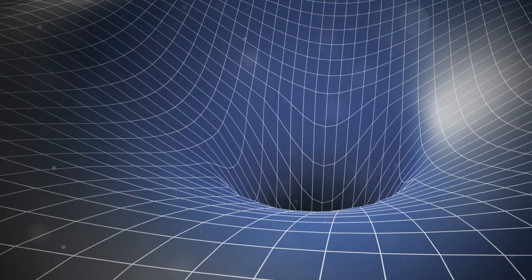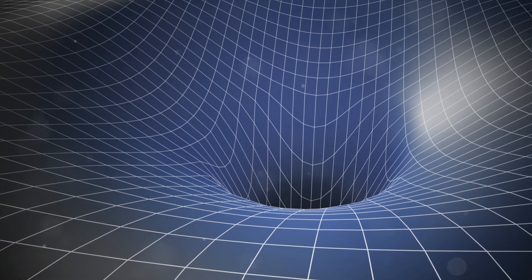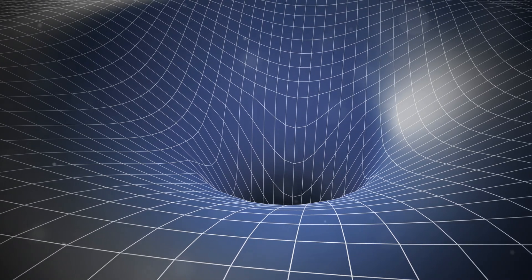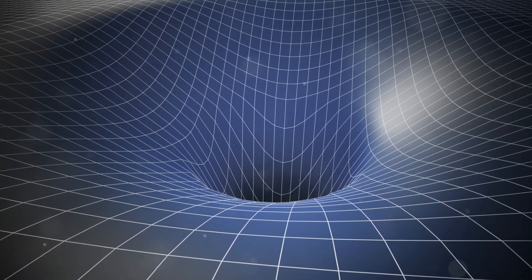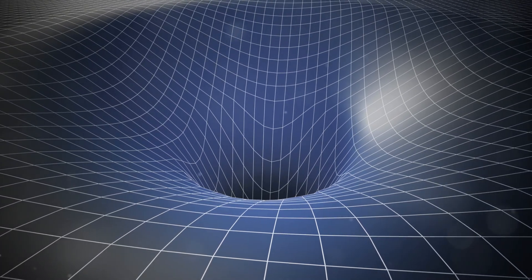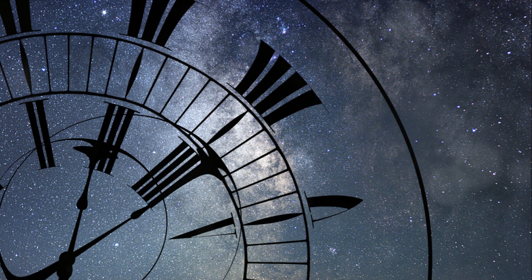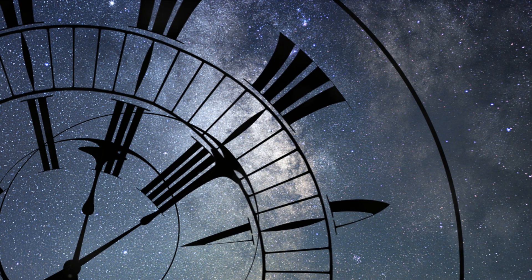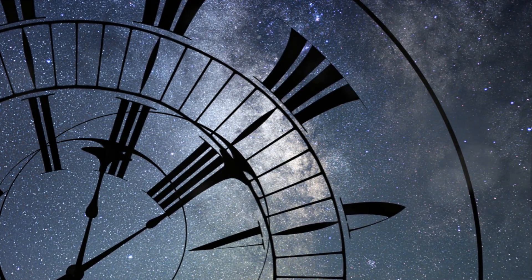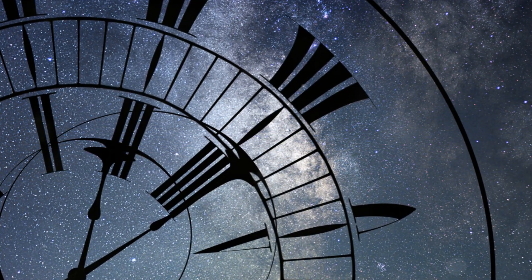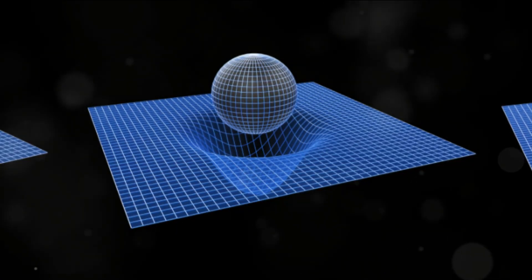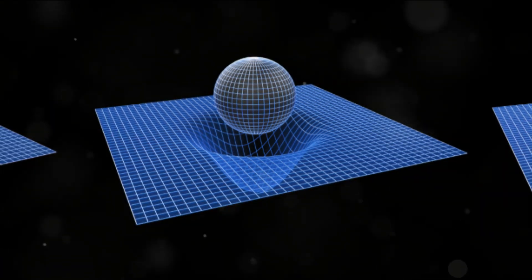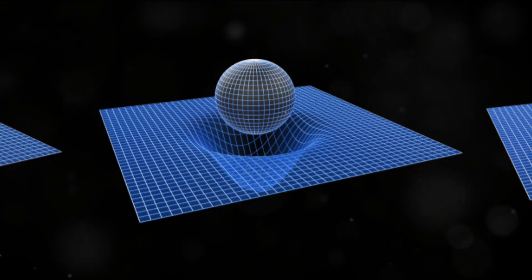But the effects of this warped space-time don't stop at the motion of celestial bodies. They also stretch to the very flow of time itself, a phenomenon known as gravitational time dilation. Time you see is not absolute. It can be influenced by gravity. Consider the difference between a clock on earth and a clock on a satellite orbiting earth. The clock on the satellite being further from the mass of the planet and thus experiencing less gravitational pull, ticks faster than the clock on earth. This isn't a malfunction or a miscalibration. It's a very real, very tangible manifestation of gravitational time dilation. The stronger the gravitational pull, the slower time moves.